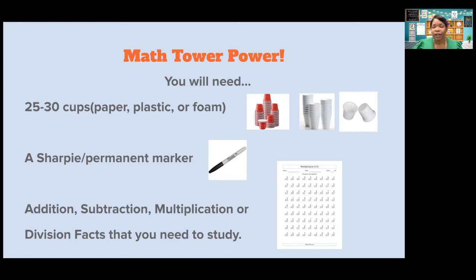And the last thing that you'll need to do is to think about those facts that you haven't mastered yet. Maybe your teacher gave you a one minute test and you had a few that you struggled with, or maybe you just know that you've really been struggling with your seven times tables. Whatever those facts are, get them in your head or write them down, because those are the facts that you're going to write on these cups and study and practice during this game.